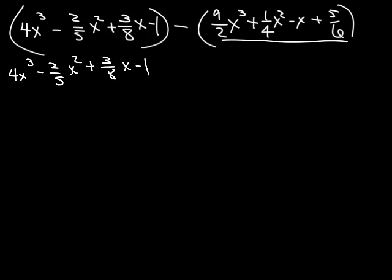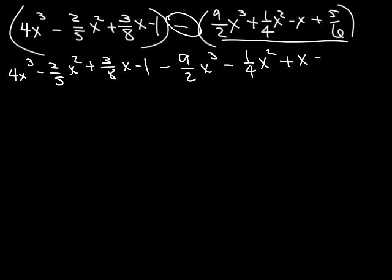And the second one, because of this minus sign, we're changing all the signs. So, instead of a positive 9/2, it's going to be a negative 9/2 x cubed minus 1/4 x squared plus x minus 5/6.